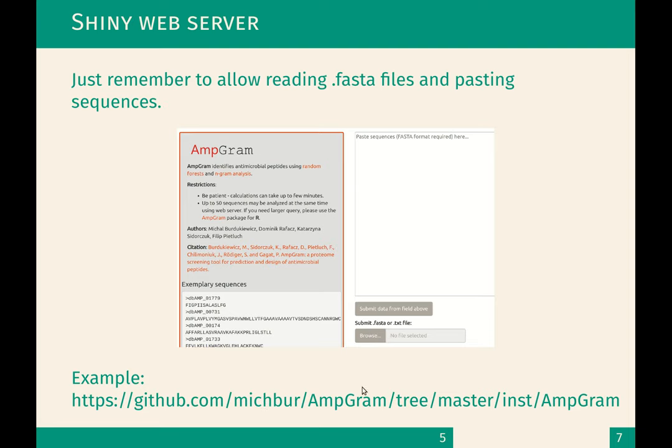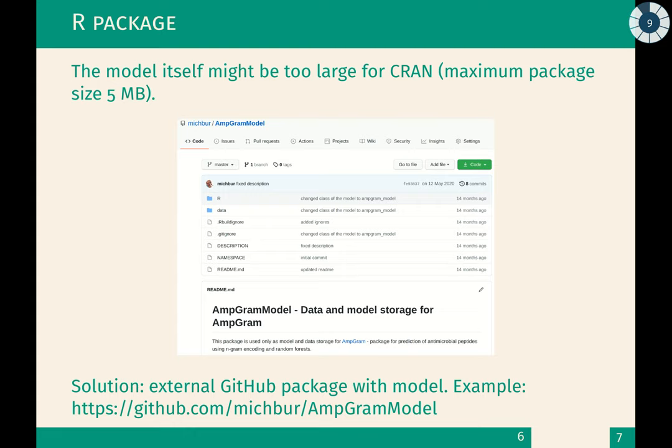And of course, there is the Shiny web app of Ngram. One last part is the deployment of the R package. If you are trying to make a package with your model, you are of course creating a predict function that works with your trained model. Sometimes models are too large for CRAN, because CRAN accepts only packages up to 5 MB. In that case, you can make an external GitHub package with the model. On CRAN we are hosting the Mgram package, but it depends on the Mgram model which can be downloaded from the web.